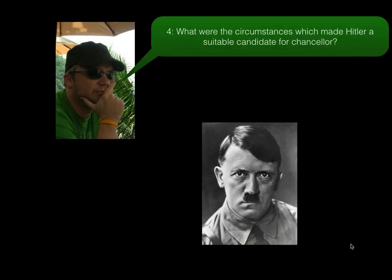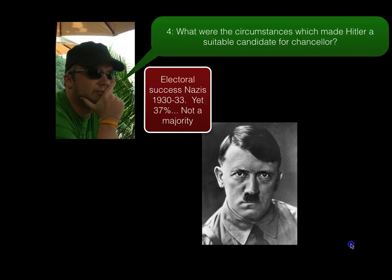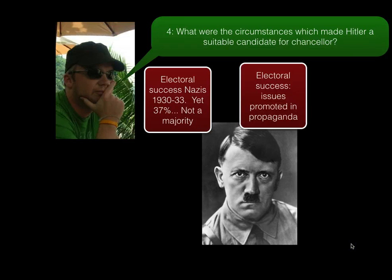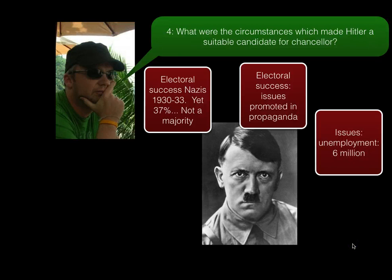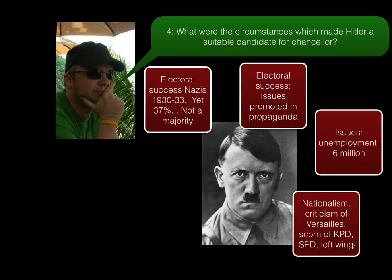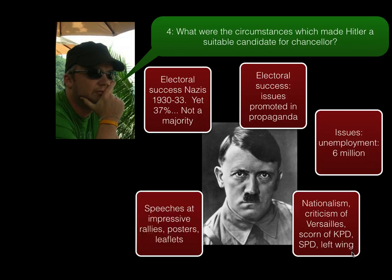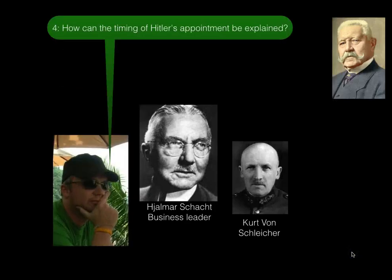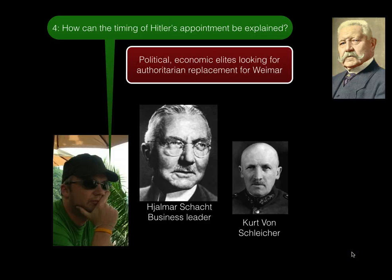Let's quickly recap: what were the circumstances which made Hitler a suitable candidate for chancellor? The electoral success we looked at in the previous video. The range of issues promoted in propaganda — a party for all, strong leadership, targeting different voters. Unemployment being one of those key issues. Criticism of Versailles, presenting the communists as a threat and the Nazis as the saviors of Germany from communism. Impressive speeches at large rallies, energetic posters, leaflets, etc.